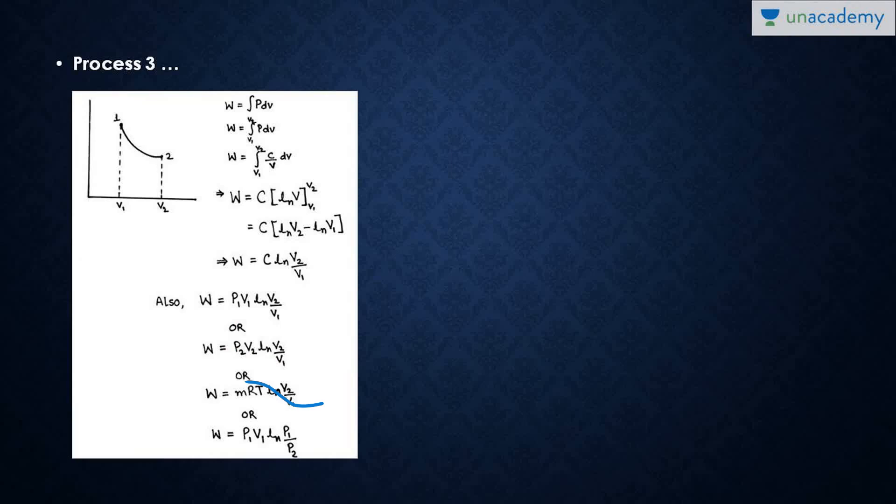To summarize so far: work transfer in constant volume process is zero; work transfer in constant pressure process is P(V2 minus V1); work transfer in isothermal process is P1V1 natural log of V2/V1, or P2V2 natural log of V2/V1, or MRT natural log of V2/V1, or P1V1 natural log of P1/P2.